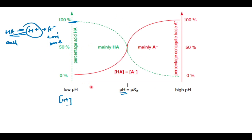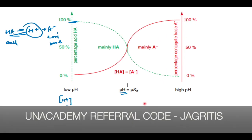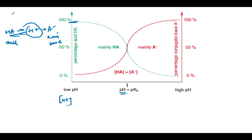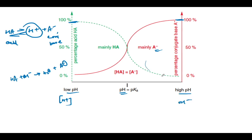When there is a lot of base — when the pH has increased — and if there is a lot of OH⁻, the equilibrium will favor the formation of A⁻. The equilibrium shifts towards the right, giving maximum concentration of A⁻. So at low pH we have mainly HA, and at high pH we have mainly A⁻.